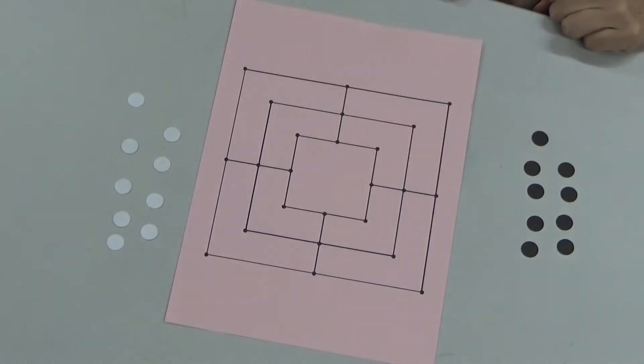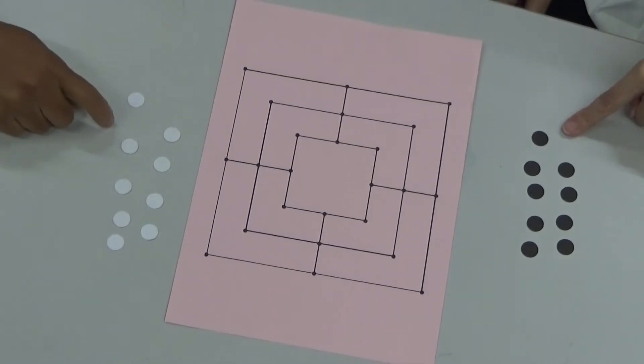Okay, and each player starts with nine pieces. As you can see there, nine black and nine white.